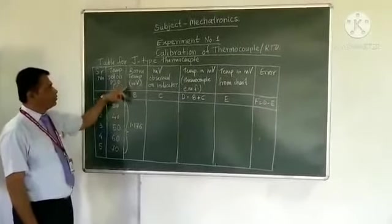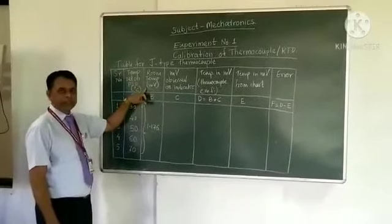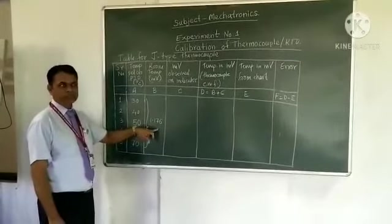And second column is room temperature in millivolts, that is room temperature at least 20 degrees centigrade. And in millivolts it is converted to 1.176 millivolts.